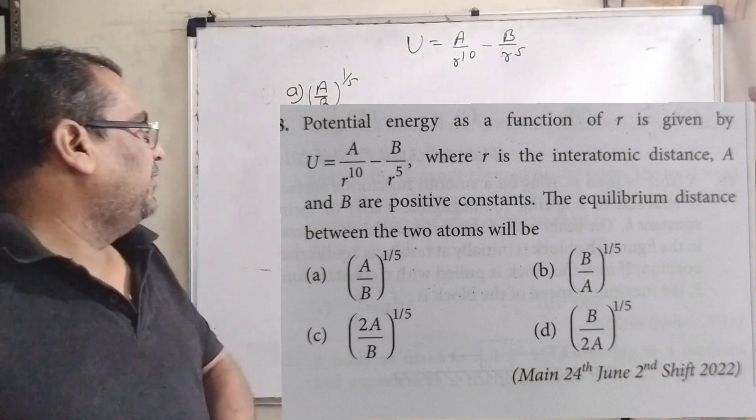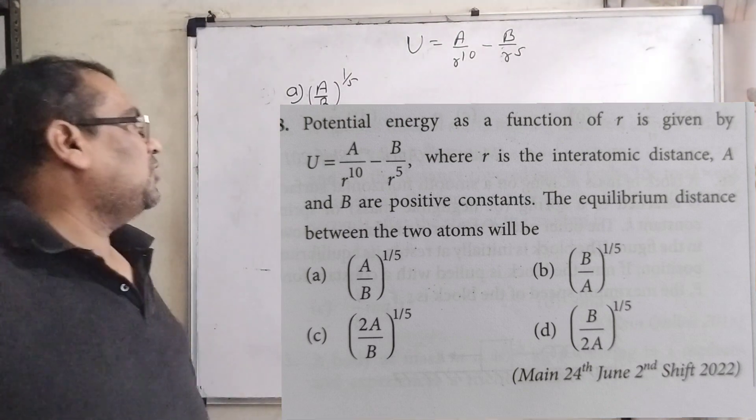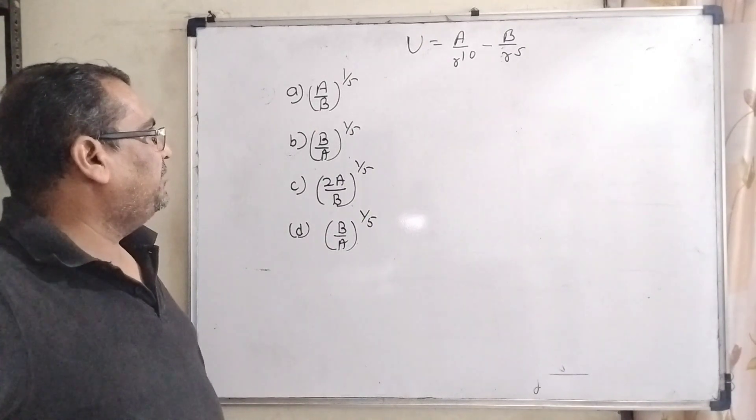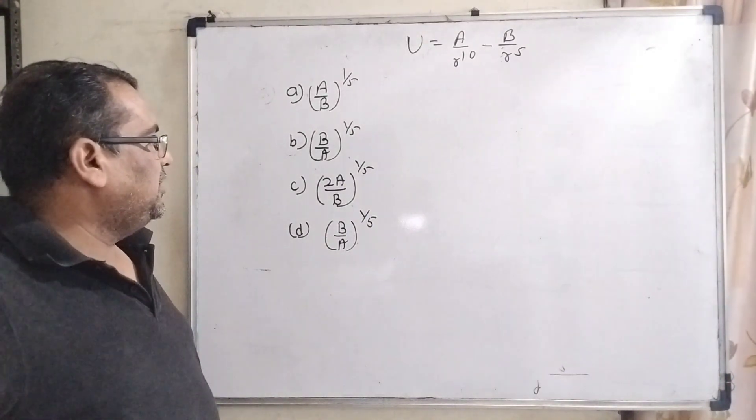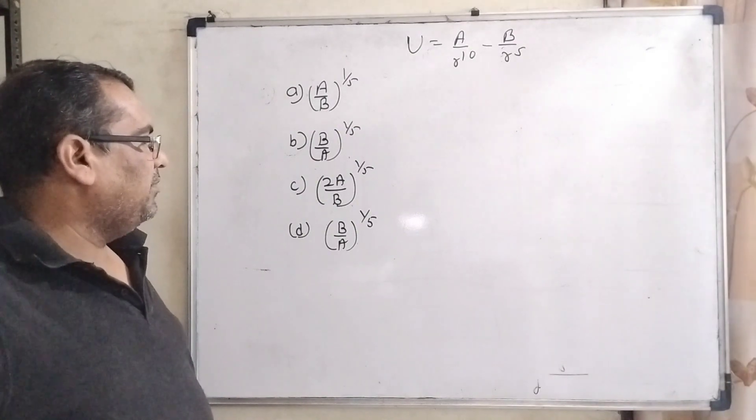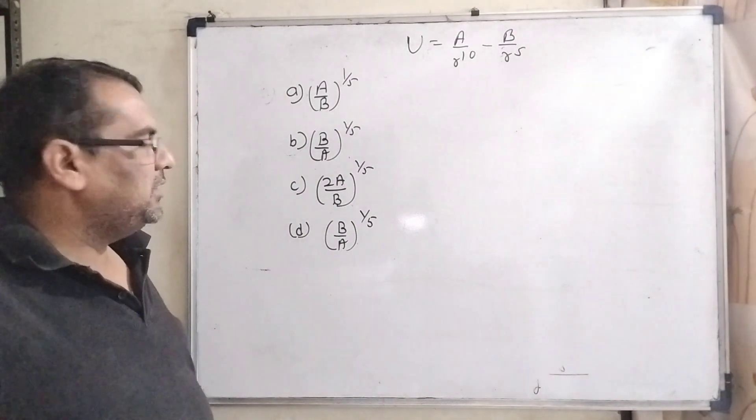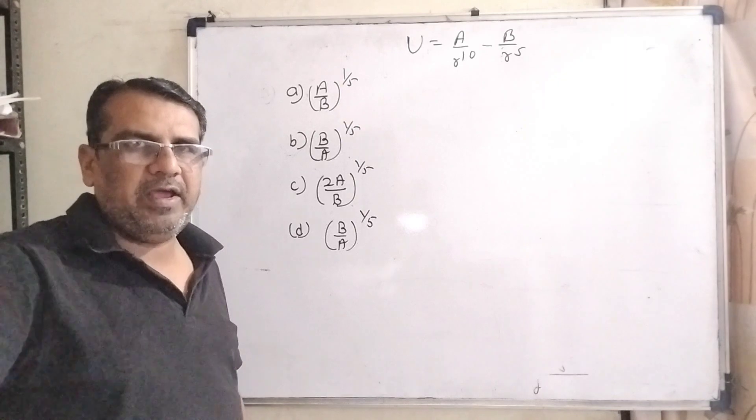Here we have given four options. First option A: A by B raised to power 1 by 5. Option B: B by A raised to power 1 by 5. Option C: 2A by B raised to power 1 by 5. And last D option is B by 2A raised to power 1 by 5.